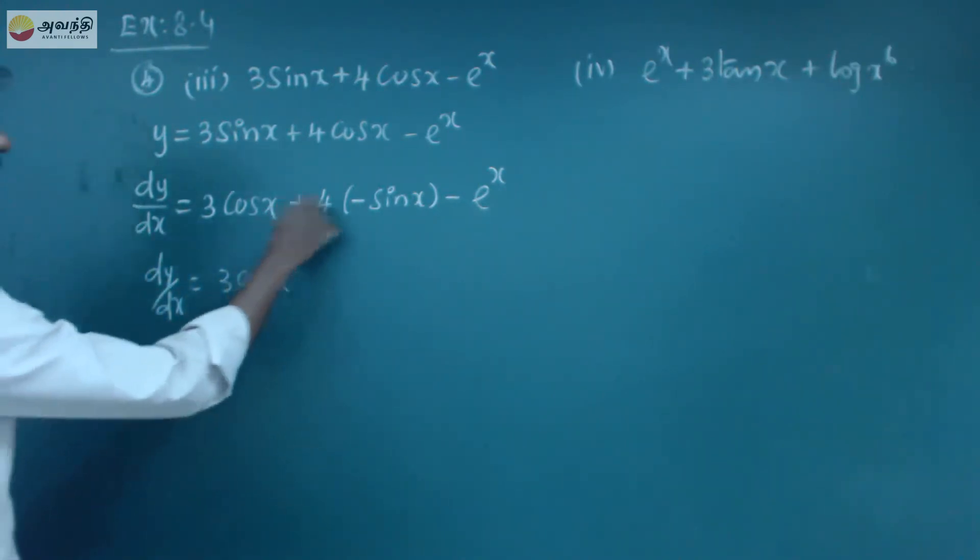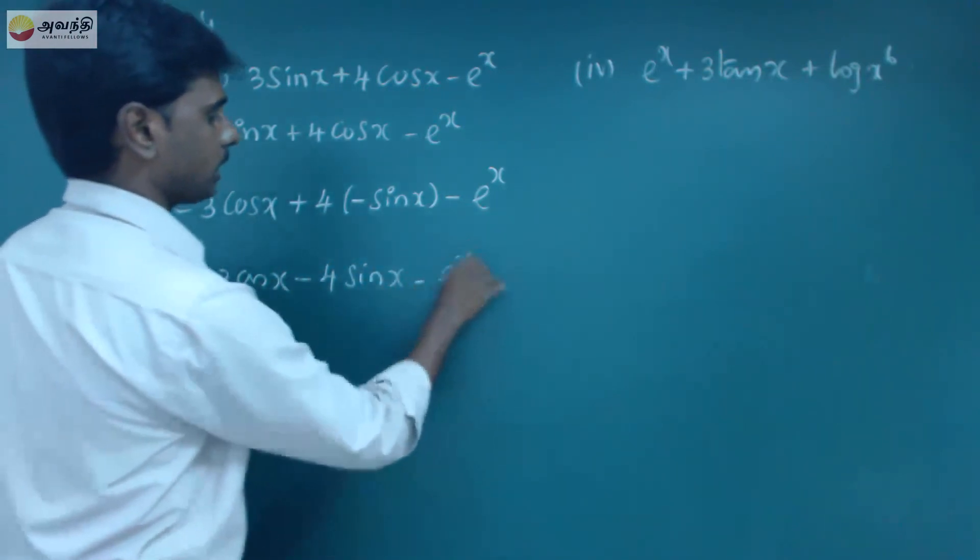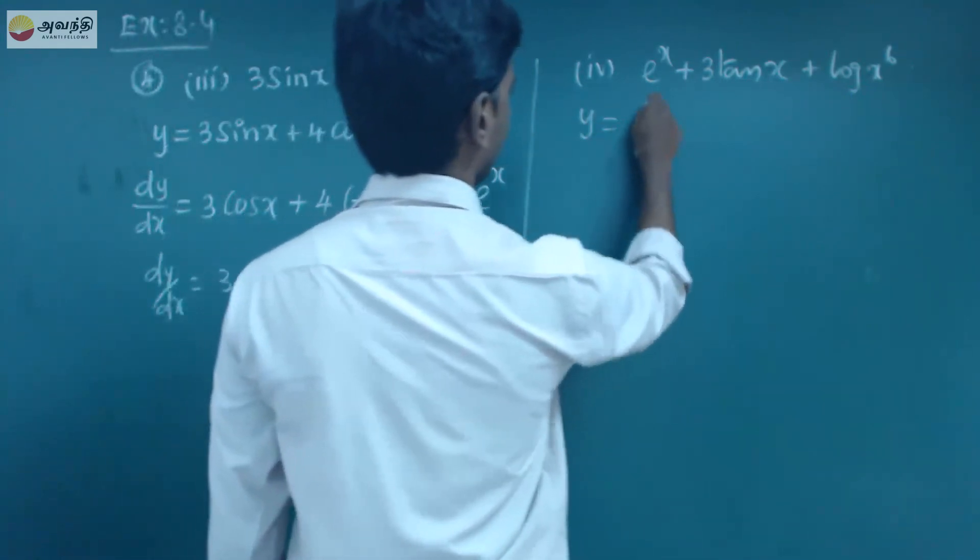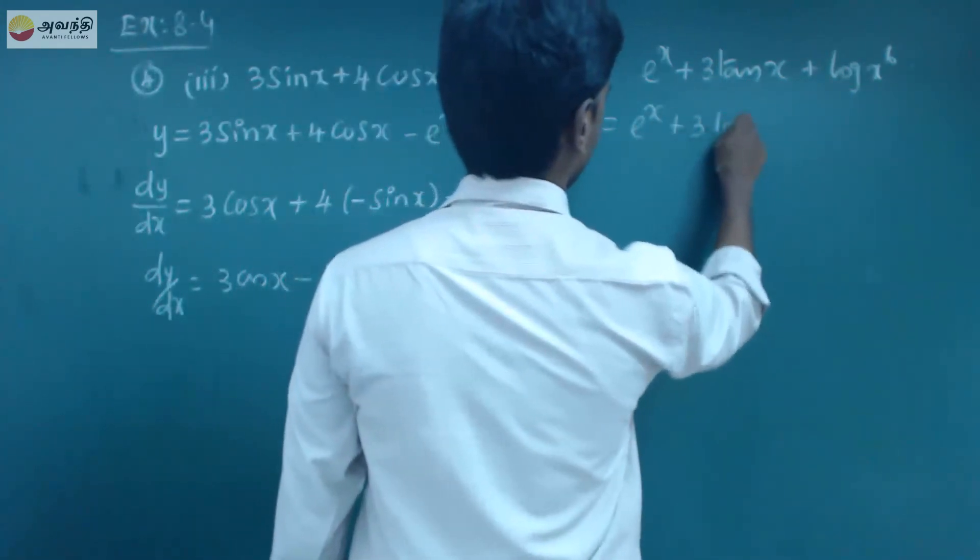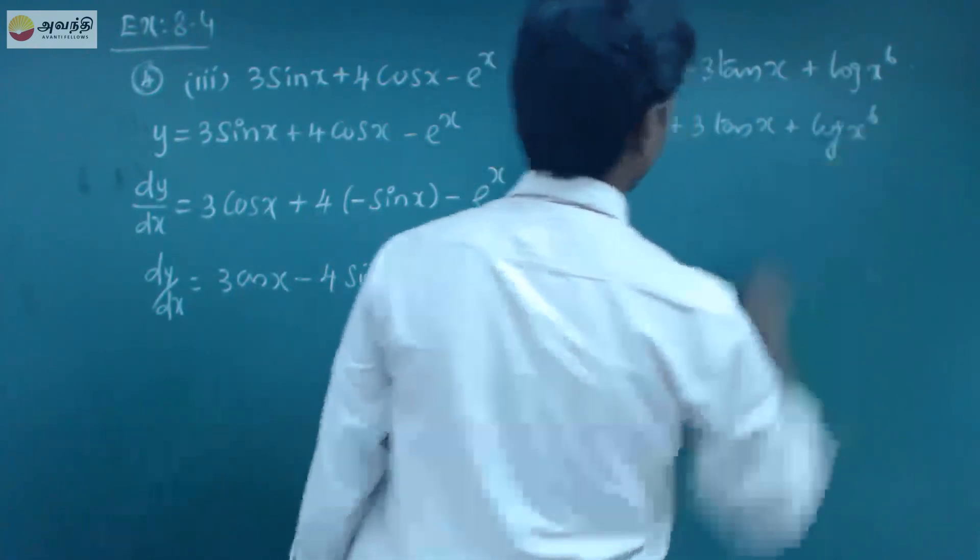And next fourth cos x, fourth cos x. y is equal to e power x plus 3 tan x plus log x power 6, okay valla.